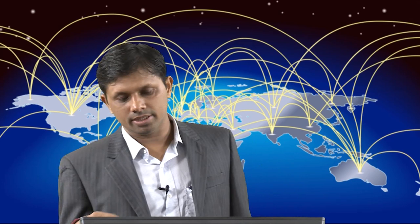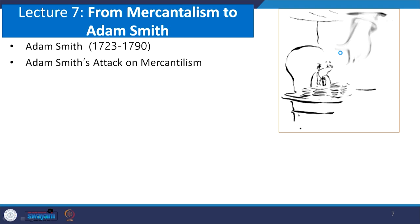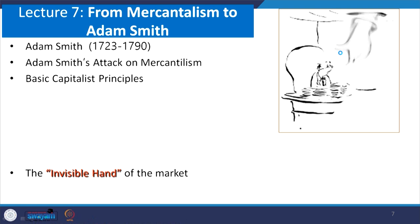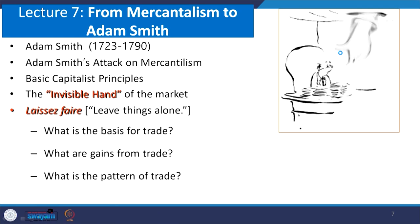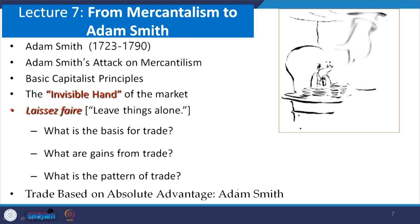From lecture 7 onwards we arrived at the core classical theory by the father of the nation, Adam Smith. The invisible hand is responsible for correcting the market. Adam Smith's theory attacked mercantilism on various grounds, and they strongly believed in laissez-faire — what is the basis for trade, what are the gains from trade, and what are the patterns of trade. Adam Smith's theory is largely based on absolute cost advantage. We also gave this example to verify between the US and India using labor productivity.